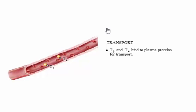The thyroid hormones are lipid-soluble, and therefore bind to carrier proteins for transport through the circulatory system. Approximately 99% of thyroid hormones are bound, and they exist in dynamic equilibrium, with 1% of unbound or free hormone in the plasma. Only the free hormones are available to leave the bloodstream and act on target cells.